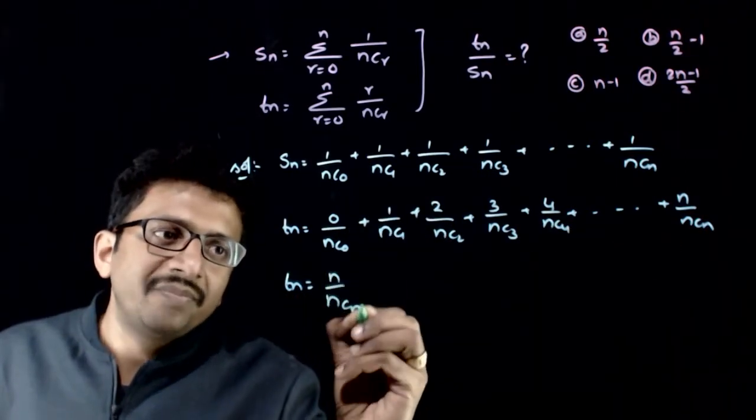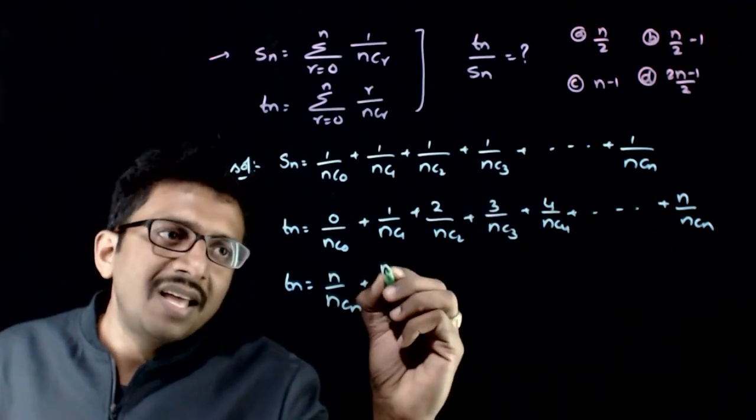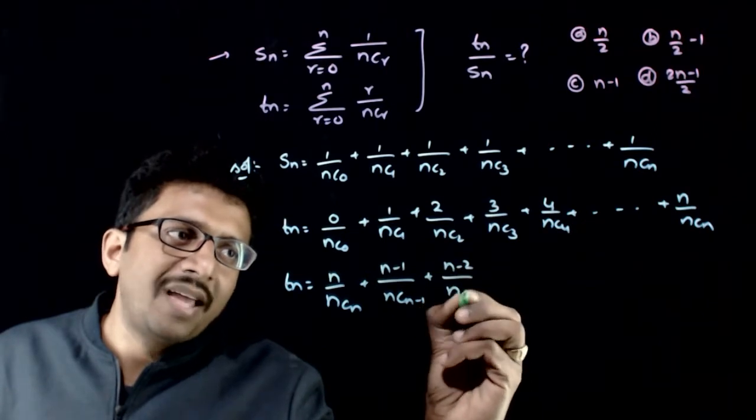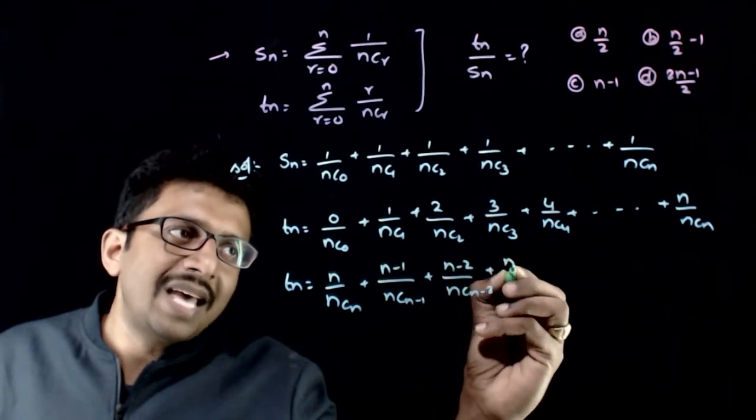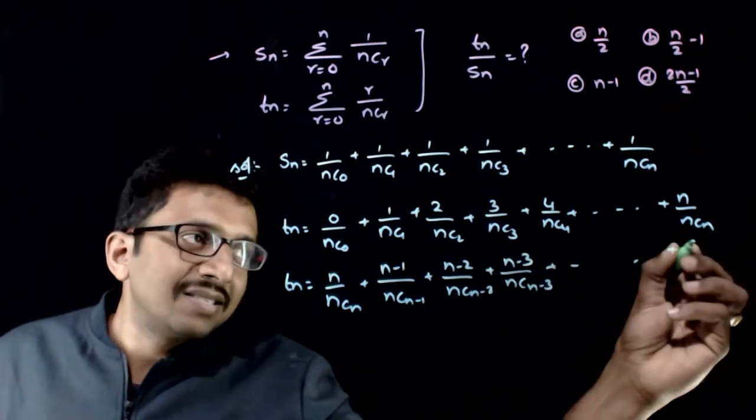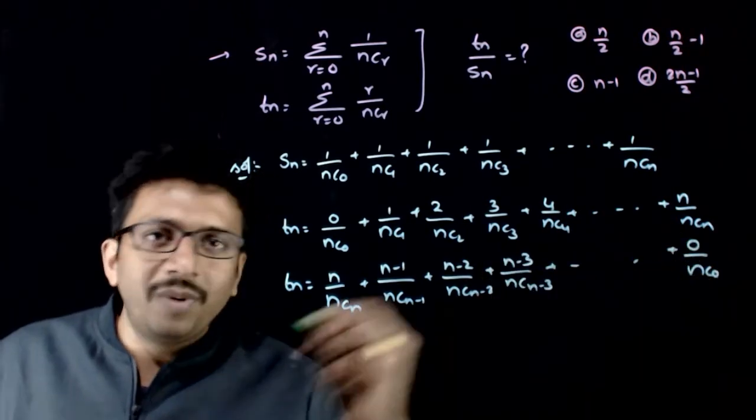n by nCn plus what is the term before this? n minus 1 by nC(n-1) plus n minus 2 by nC(n-2) plus n minus 3 by nC(n-3) plus so on to last you get 0 by nC0.